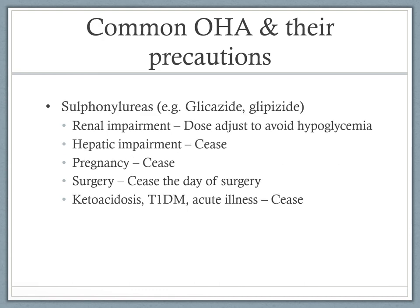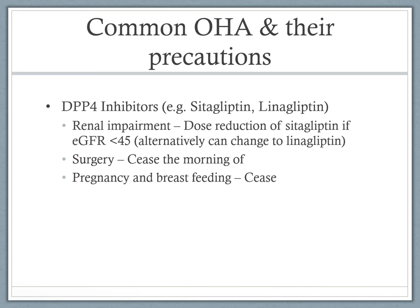Sulfonylureas — such as gliclazide — can be dose-adjusted for renal impairment or sometimes ceased altogether. For hepatic impairment and pregnancy, the recommendation is to stop. If the patient is going for surgery, cease the day of surgery, similarly to metformin. If the patient has any acute illness or ketoacidosis, stop as well. For DPP4 inhibitors — such as sitagliptin and linagliptin — renal function must be assessed. Sitagliptin should be dose-reduced if eGFR is less than 45; alternatively, switching to linagliptin is reasonable as it requires no dose adjustment for renal impairment. Cease DPP4 inhibitors the day of surgery, and avoid in pregnancy and breastfeeding due to lack of safety evidence.